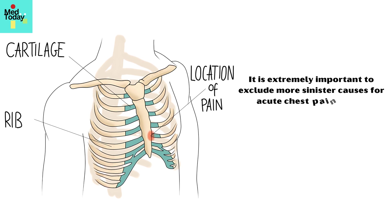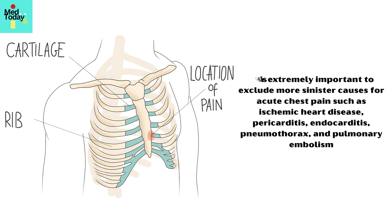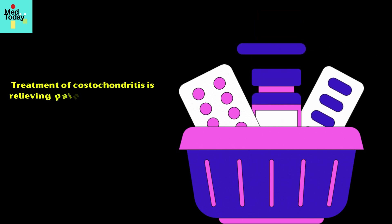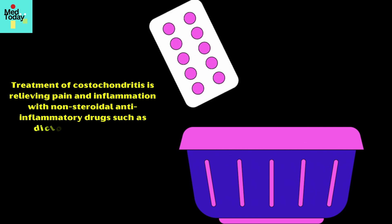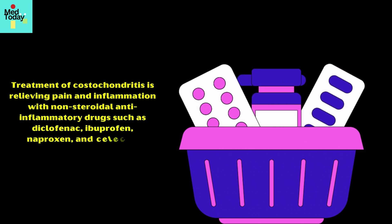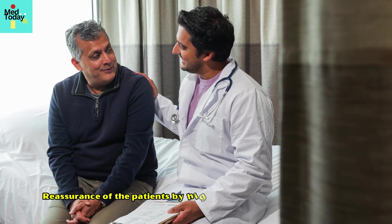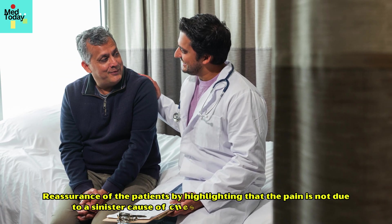The diagnosis of costochondritis is mainly clinical. It is extremely important to exclude more sinister causes of acute chest pain such as ischemic heart disease, pericarditis, endocarditis, pneumothorax, and pulmonary embolism. Treatment involves relieving pain and inflammation with non-steroidal anti-inflammatory drugs such as diclofenac, ibuprofen, naproxen, and celecoxib. Reassurance of the patient — highlighting that the pain is not due to a sinister cause — is extremely important.